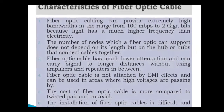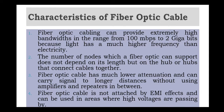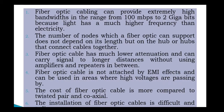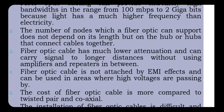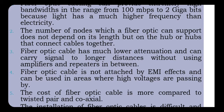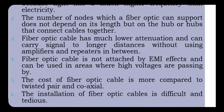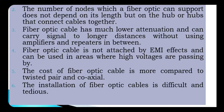Characteristics of fiber optic cables: fiber optic cabling can provide extremely high bandwidth in the range from 100 Mbps to 2 Gigabits, because light has a much higher frequency than electricity. The number of nodes a fiber optic cable can support does not depend on its length but on the hub or hubs that connect the cables together. Fiber optic cable has much less attenuation and can carry the signal over longer distances without amplifiers or repeaters. It is not affected by EMI effects and can be used in areas where high voltage is present. However, the cost and installation of fiber optic cable are greater and more difficult compared to other cables.